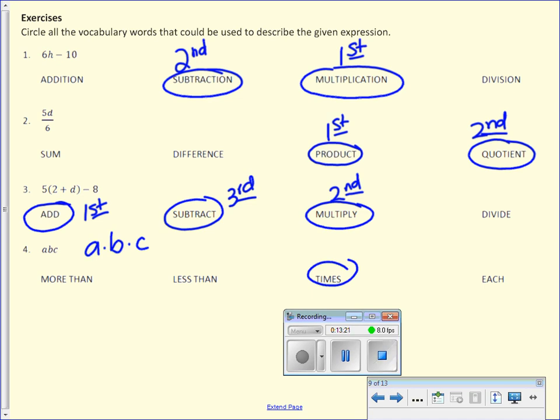So tonight for your homework, make sure for number 1, you list 5 vocabulary words for all of the given examples. Use your notes as a resource, and then for number 2, use those notes to help you write expressions for each of those.